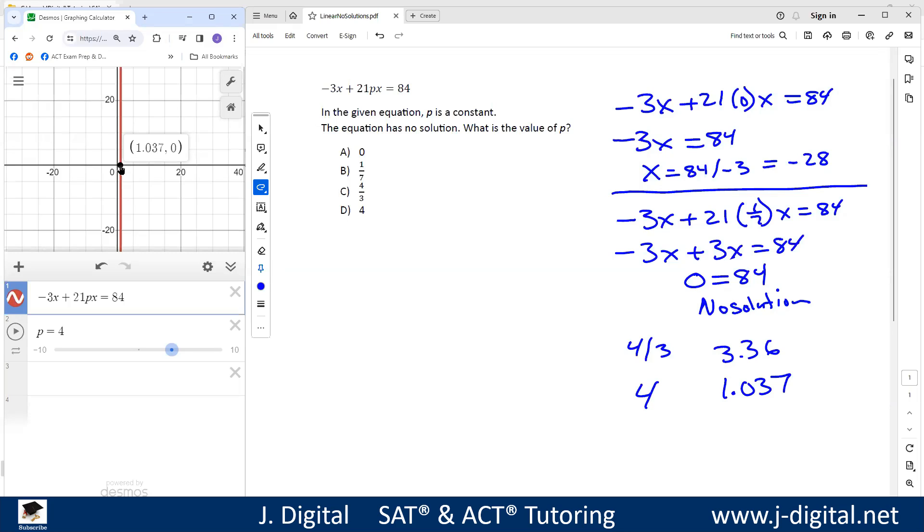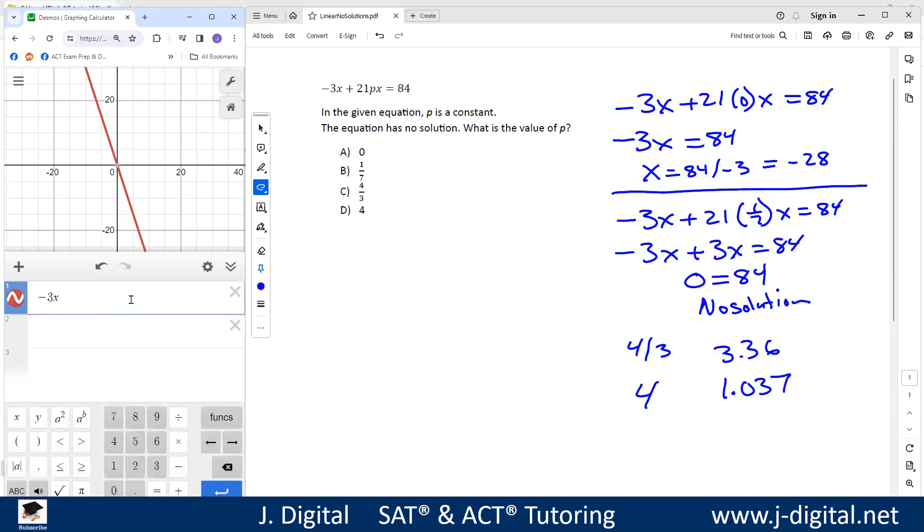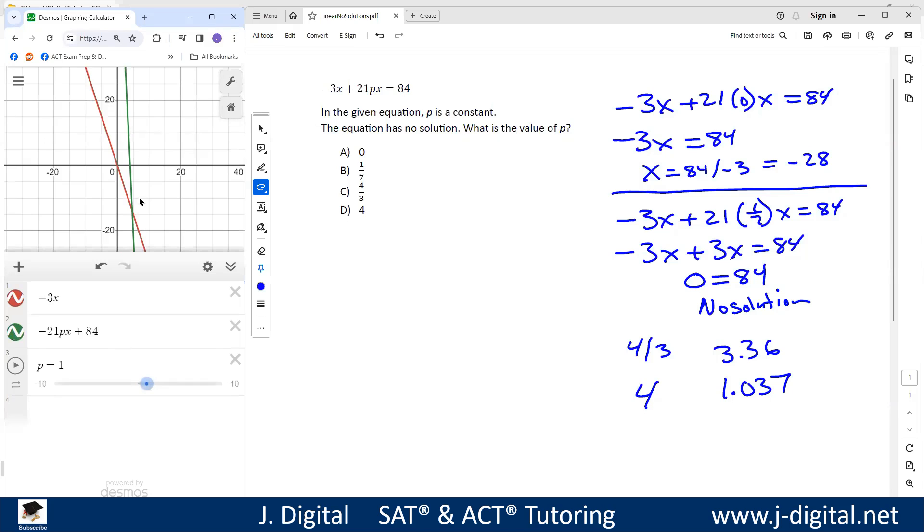Another way to think of this is two lines. If I have negative 3x as one of the lines, I move the 21px to the other side. That ends up giving me negative 21px plus 84. And again, we have a slider here. So we have this red line, this green line.